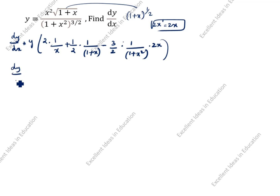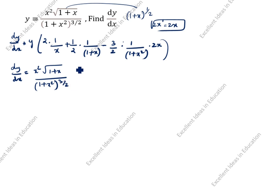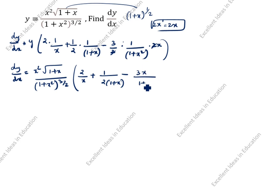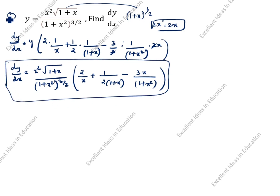dy by dx is equal to: y value is x times square root of (1 plus x) divided by (1 plus x squared) to the power 3 by 2. Open the bracket: 2 divided by 2 into (1 plus x) — the 2 and 2 cancel — minus 3x divided by (1 plus x squared). This is the answer. This is the first method.